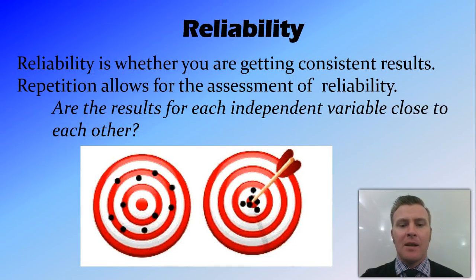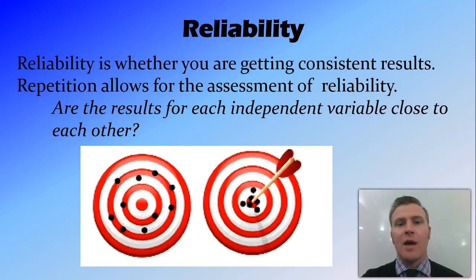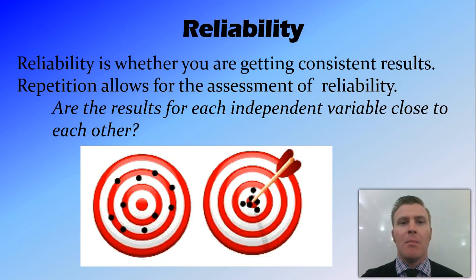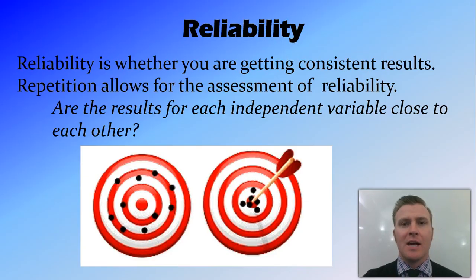Reliability is about getting consistent results — you want results that are all very similar to each other. Only through repetition are we able to assess whether something is reliable or not. This is why we usually repeat experiments three times. But having repetition does not necessarily mean that the results are reliable — it's only if the results are all close to each other that we can say that our experiment is reliable.